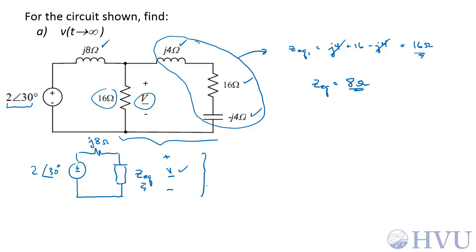Now, from my circuit down here, V as a phasor is going to be the total voltage, 2 at an angle of 30 degrees. This is a voltage divider, so I'll use ZEQ, which is going to be 8 ohms over the sum of the J8 ohm and the 8 ohm resistance. So this is J8 plus 8 ohms.